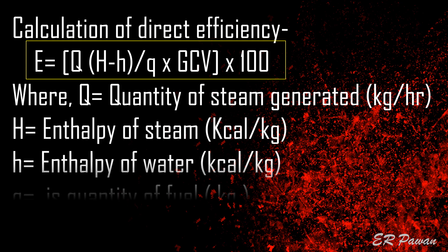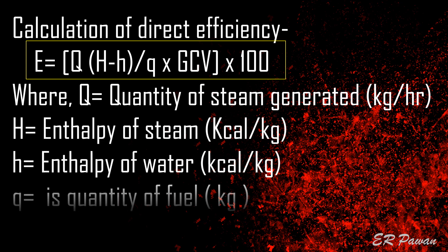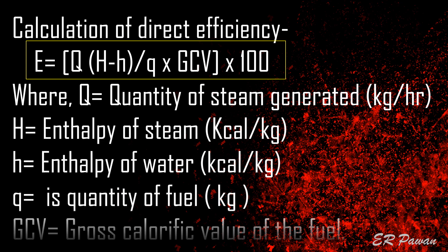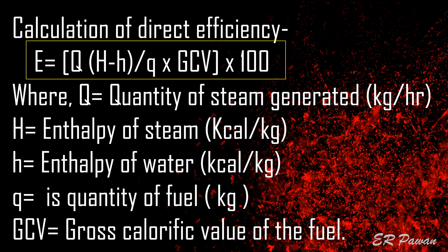Where: Q is the quantity of steam generated in kilograms per hour; H is the enthalpy of steam in kilocalories per kilogram; h is the enthalpy of water in kilocalories per kilogram; q is the quantity of fuel in kilograms; and GCV is the gross calorific value of the fuel.